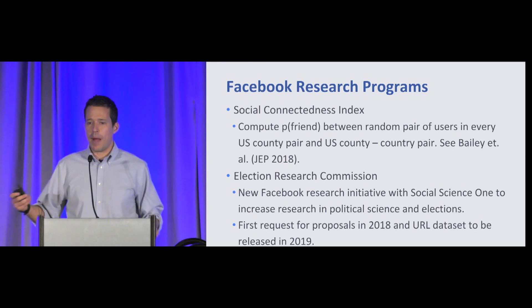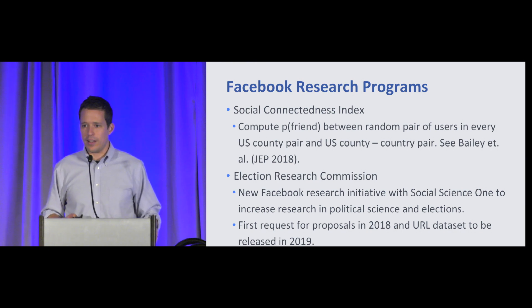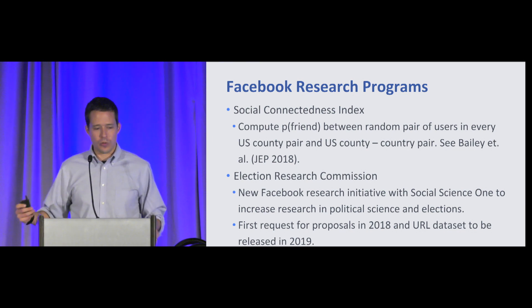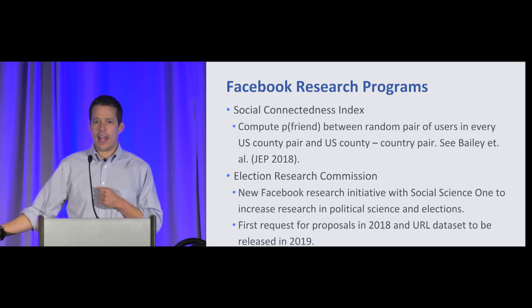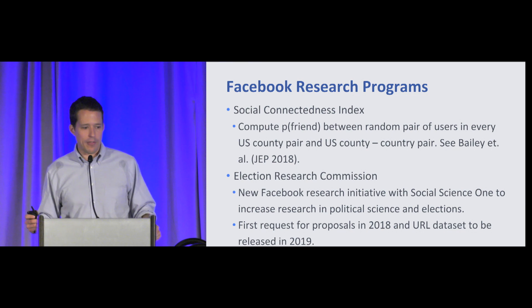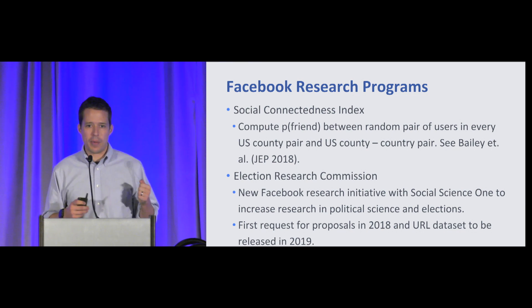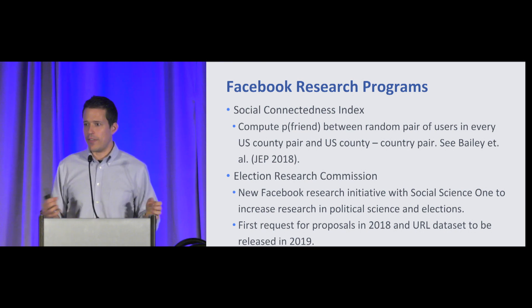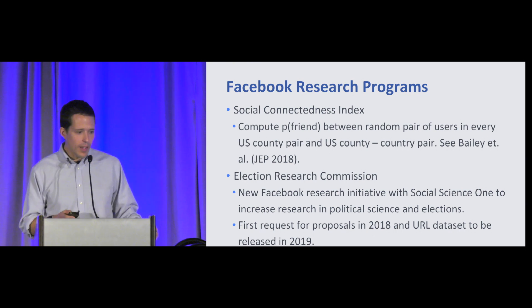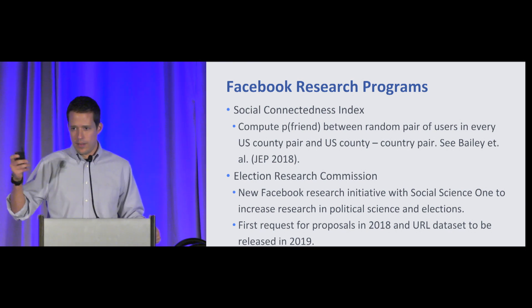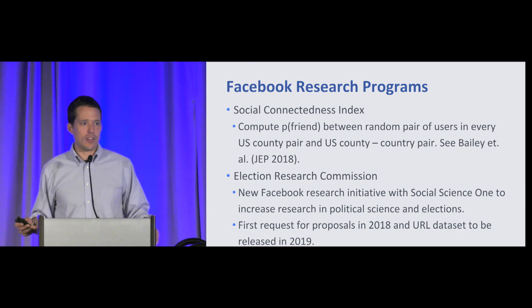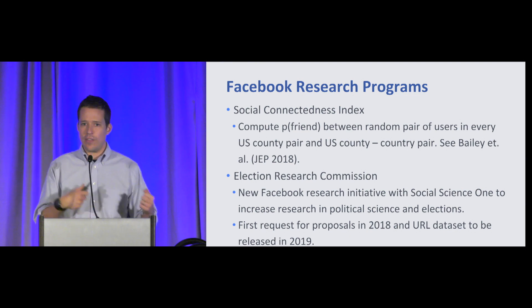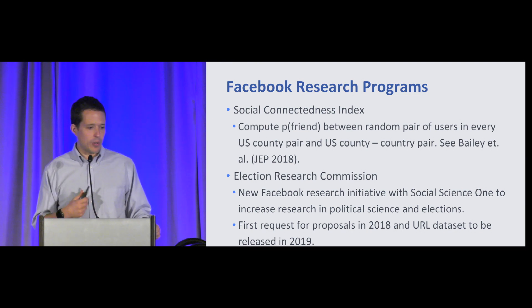I want to wrap up by talking about Facebook's research programs for data sharing. One is our data set called the Social Connectedness Index — we take the probability of friendship between a random pair of users in every U.S. county pair and every U.S. county and country pair, essentially measuring the strength of friendship between those counties. We have a paper in the JEP in 2018 that describes this data set in detail and talks about its correlation with trade, patent citations, and other important macroeconomic phenomena.